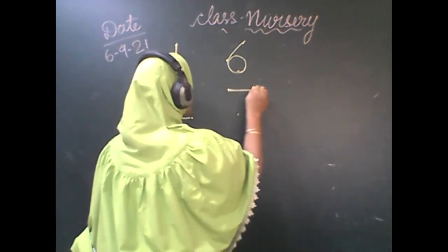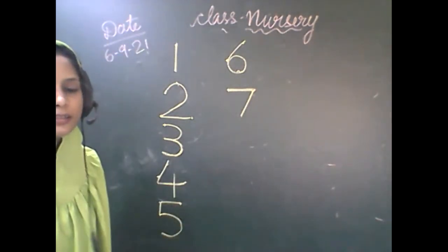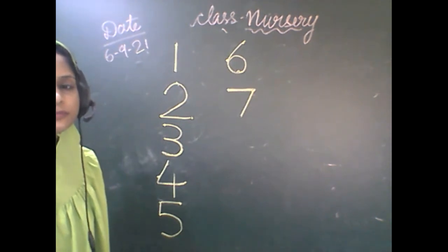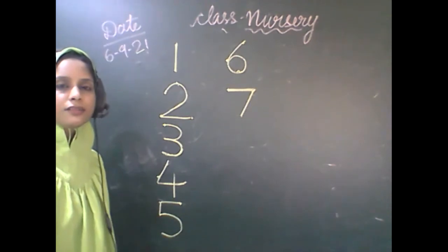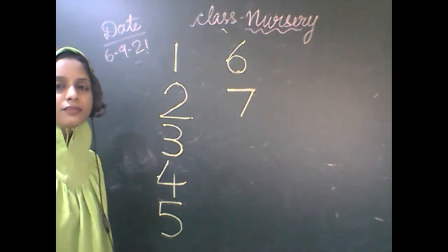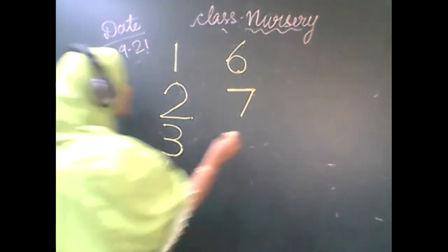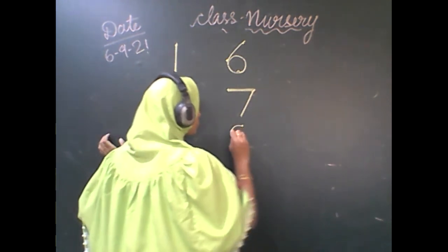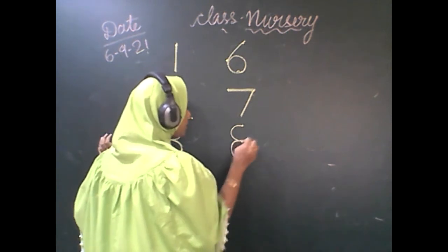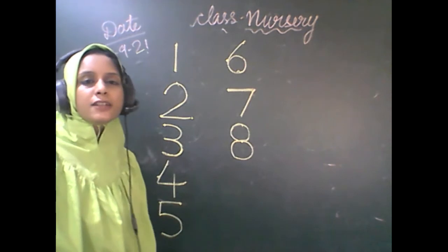Seven. You have to make one sleeping line and one slanting line makes number seven. Now after seven, number eight. So you have to make one C, one inverted C, and complete the circle. Eight. Which number is this? This is number eight.